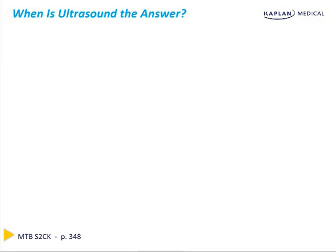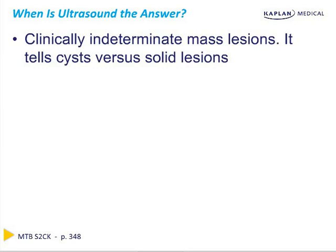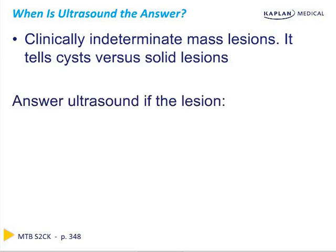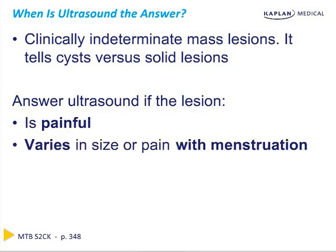Ultrasound is most useful when a mass is felt but it's not clear whether it is cystic or solid by physical exam. It is sometimes a better test in young women because dense glandular tissue makes mammograms less reliable. You should choose ultrasound as the best first test when the question stem suggests the woman does not have cancer — perhaps she has fibrocystic breast condition. Typically she will be young, in her 20s, with a painful mass that changes size throughout her menstrual cycle.